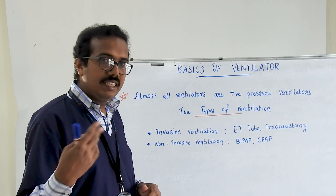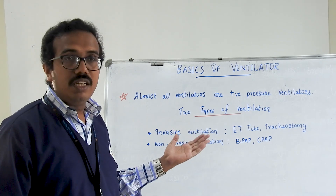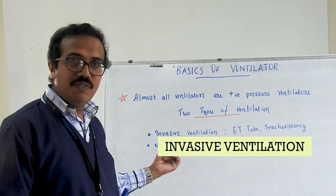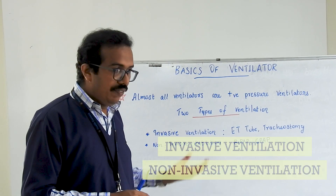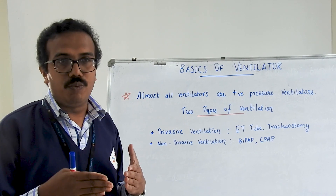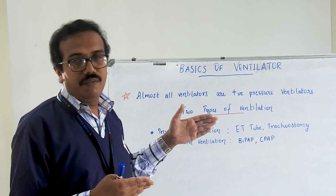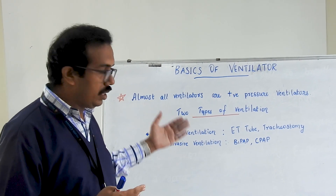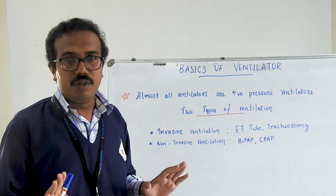Almost all ventilators are positive pressure ventilators. Based on that function, they are divided into two types: one is invasive ventilation and the other is non-invasive ventilation. In invasive ventilation, we give ventilation by the help of a tube — we use an ETT tube or a tracheostomy tube. In non-invasive ventilation, as the name implies, we are not inserting any tube.